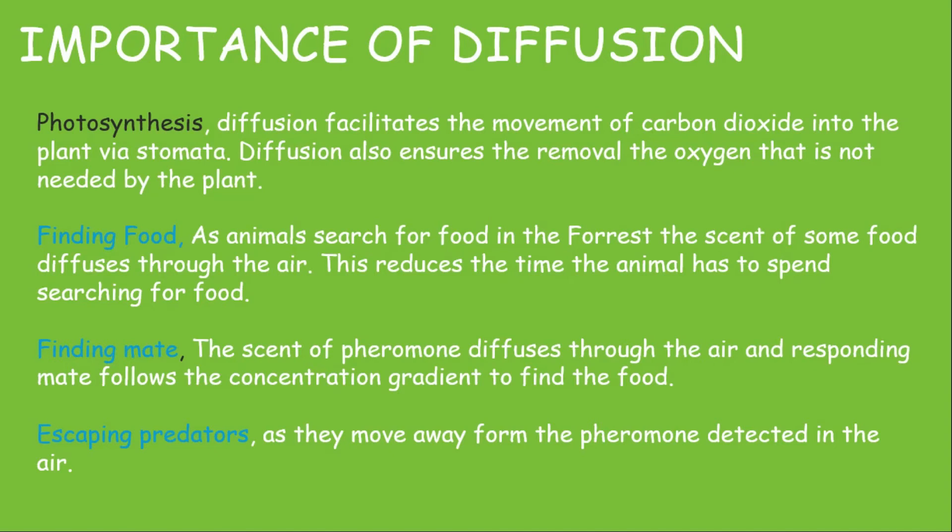Diffusion is also important in plants for photosynthesis to take place. Diffusion facilitates the movement of carbon dioxide into the plant via the stomata. It is also true that diffusion ensures the removal of oxygen not needed by the plant — during photosynthesis, the extra oxygen produced is removed from the plant by diffusion.